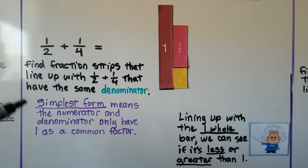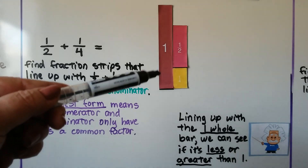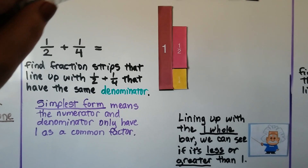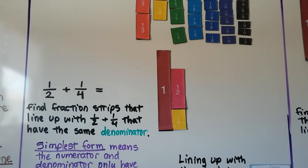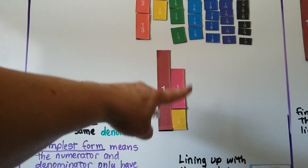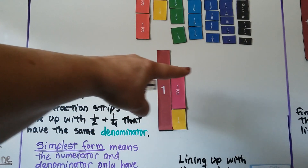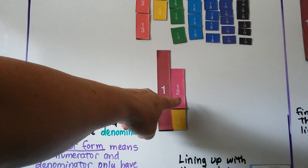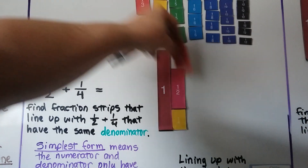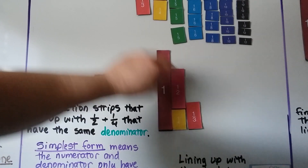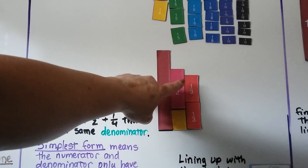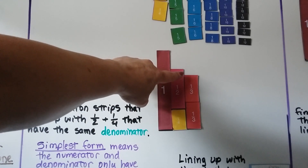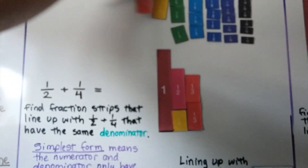We want the sum to be in simplest form, which means the numerator and denominator only have 1 as a common factor. So we want to pick the smallest denominator from this group that will be equal to these two together. We start taking pieces and lining them up next to the pink and yellow one. We try thirds — that's too small, and adding another third is too big — so it's not thirds.